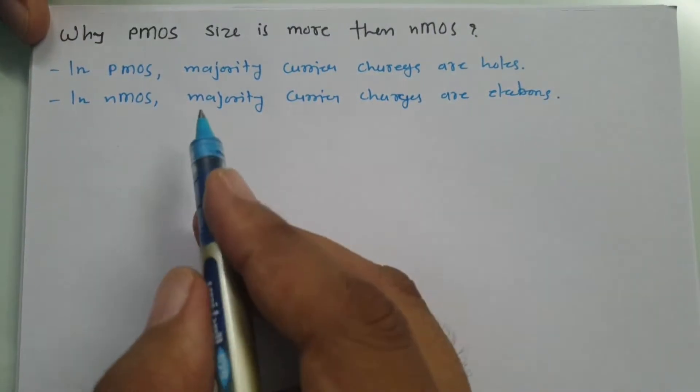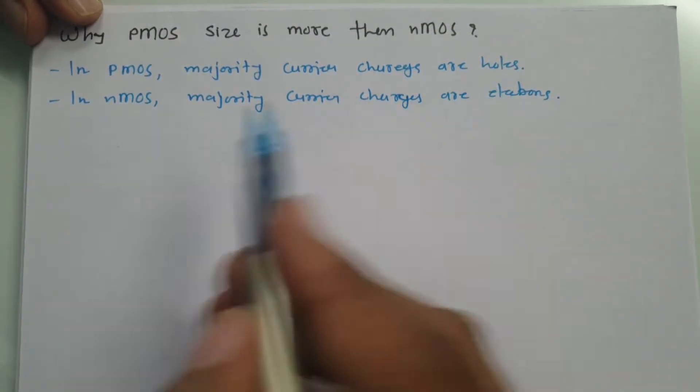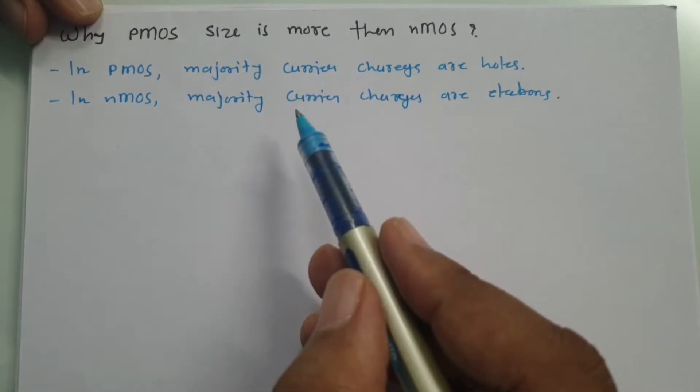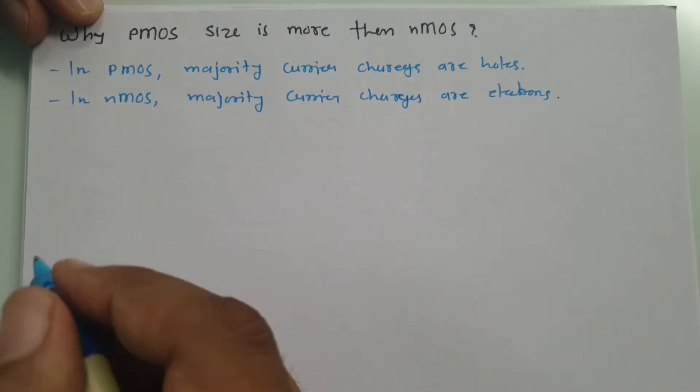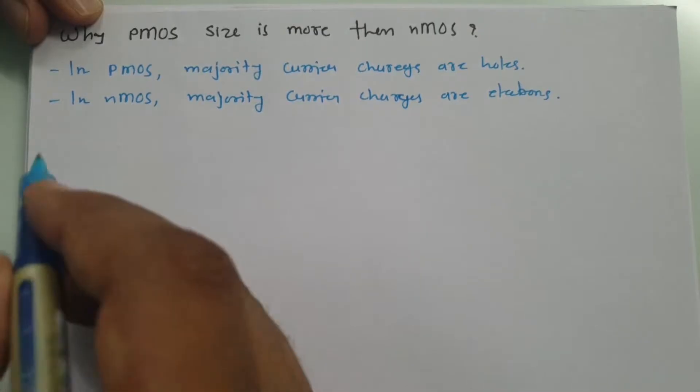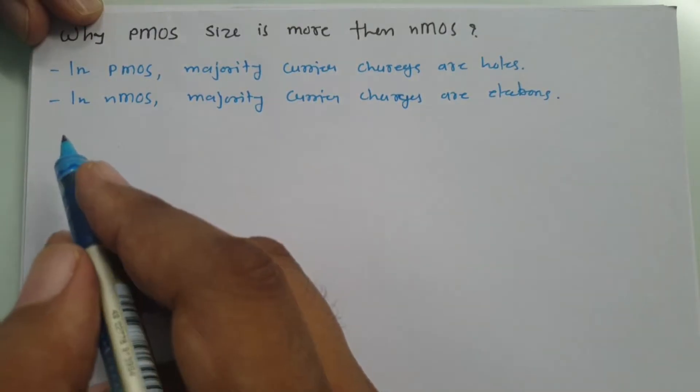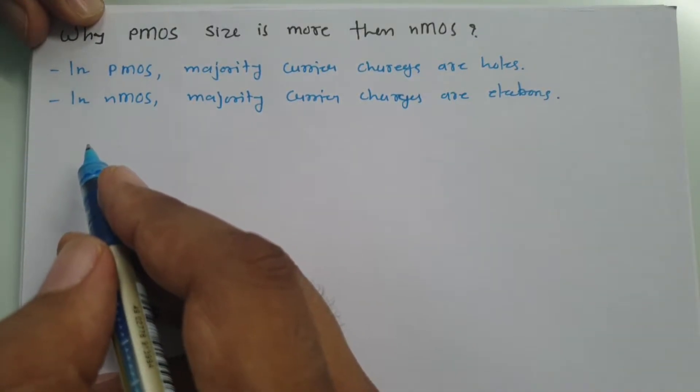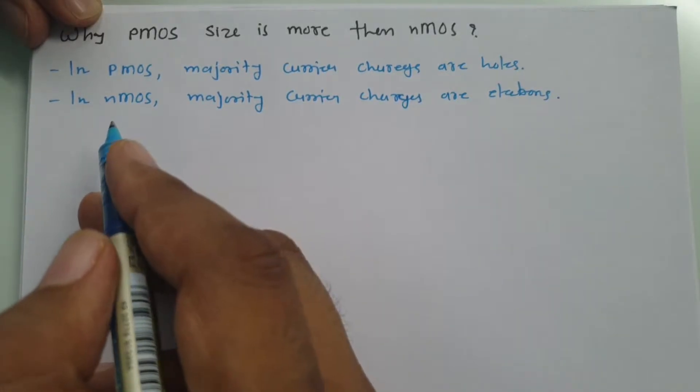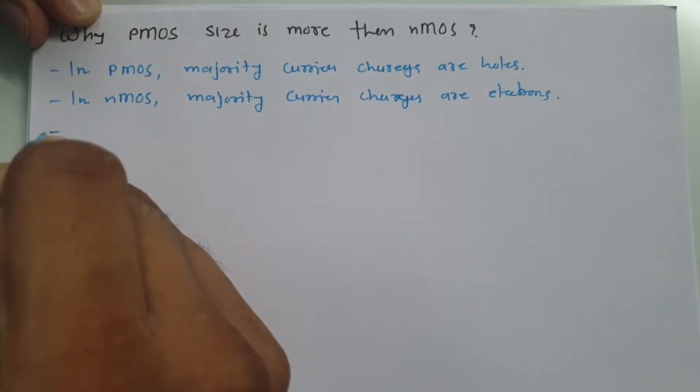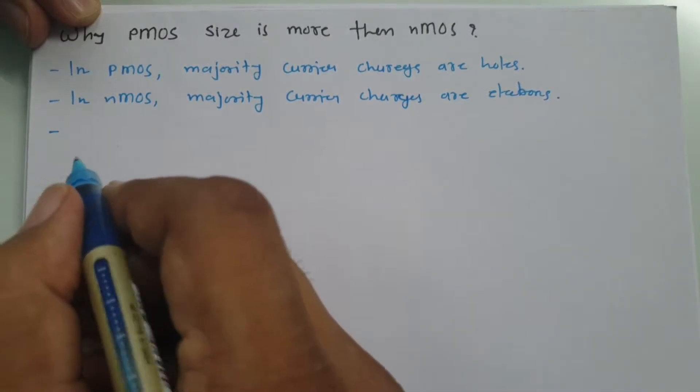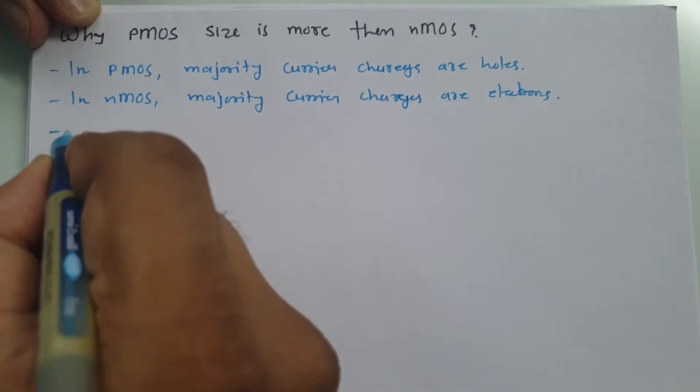In PMOS, majority carrier charges are holes and in NMOS, majority carrier charges are electrons. Electrons are having 2.5 to 3 times of mobility compared to holes. You will be finding electrons are having 2.5 to 3 times of mobility compared to holes.